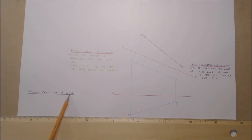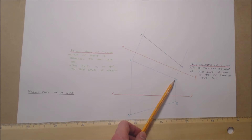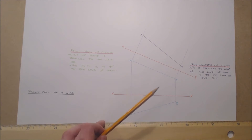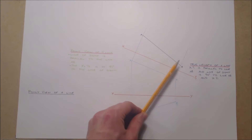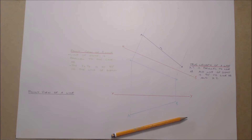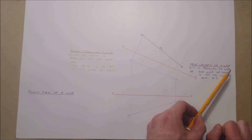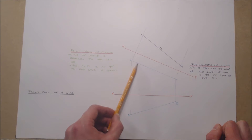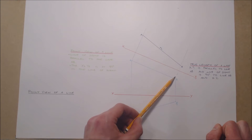Find the point view of the line AB. Given to us is the oblique line AB in plan and elevation. We have also found the true length of the line AB using an auxiliary view. We know this is a true length because the elevation of our line is parallel to the projection plane X1, Y1, and the line of sight is perpendicular to the projection plane.